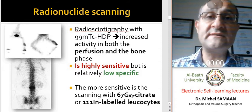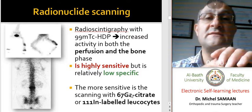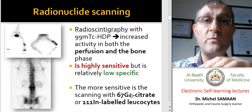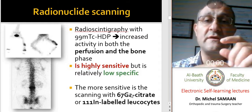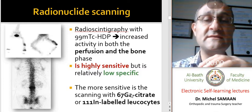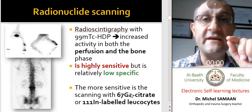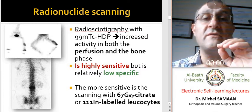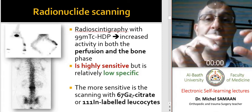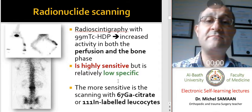Echography can guide us to make an accurate puncture from the site of collection. Radionuclide scanning or bone scan is usually done with the use of Technetium-99M. This investigation is very sensitive but not specific, because it does not directly indicate infection. A positive result indicates a warm area with increased activity in perfusion and bone phase.